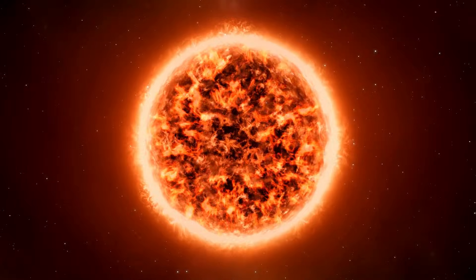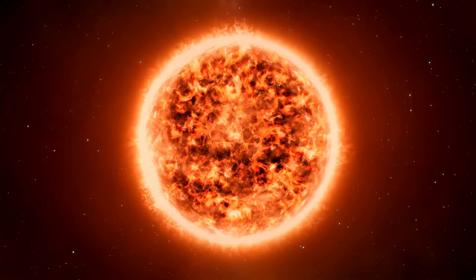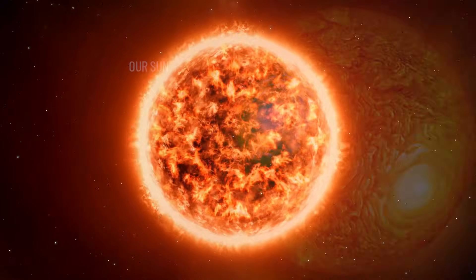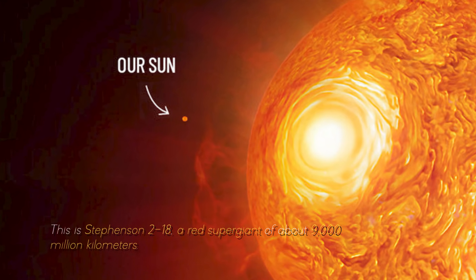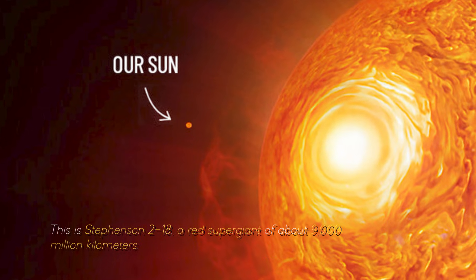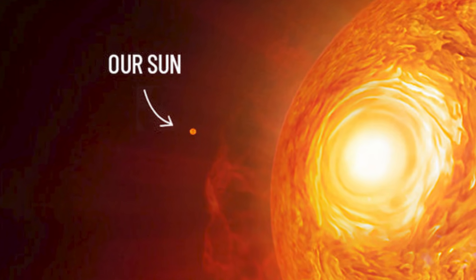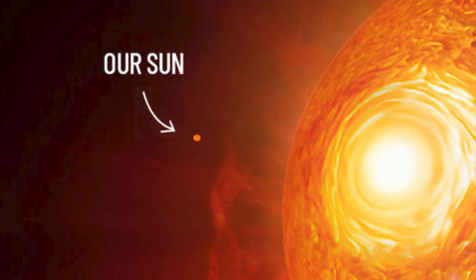Even our sun would also look small if we compare it with the largest star in the universe. This is Stevenson 218, a red supergiant of about 9,000 million kilometers, which looks like this in front of our star, something really spectacular.